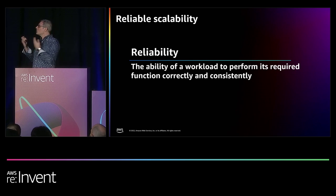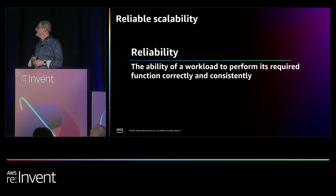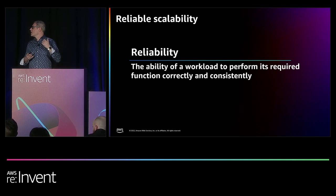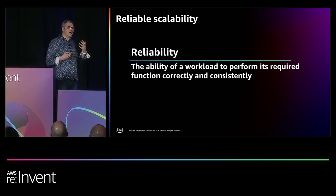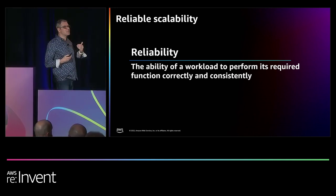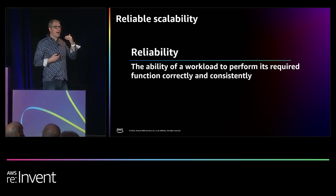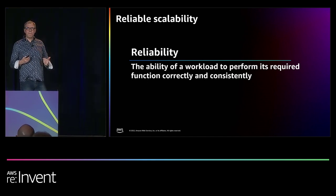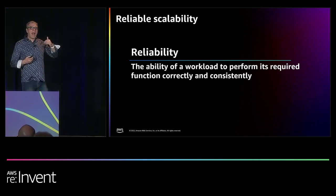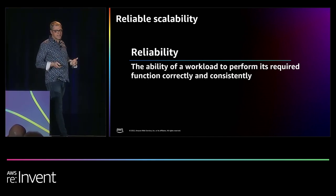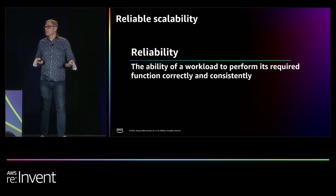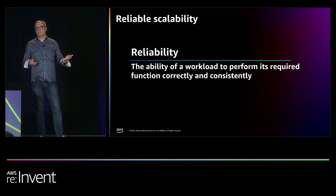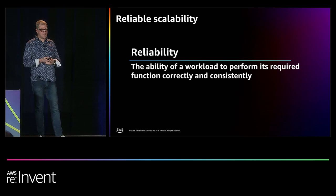So that brings us to reliable scalability. Reliability is the ability of a workload to perform its required function correctly and consistently. That's why Amazon needed scalability — they needed to get big fast and be reliable, hence they needed scalability. Today we're diving into examples of Amazon.com teams doing that and building on AWS.